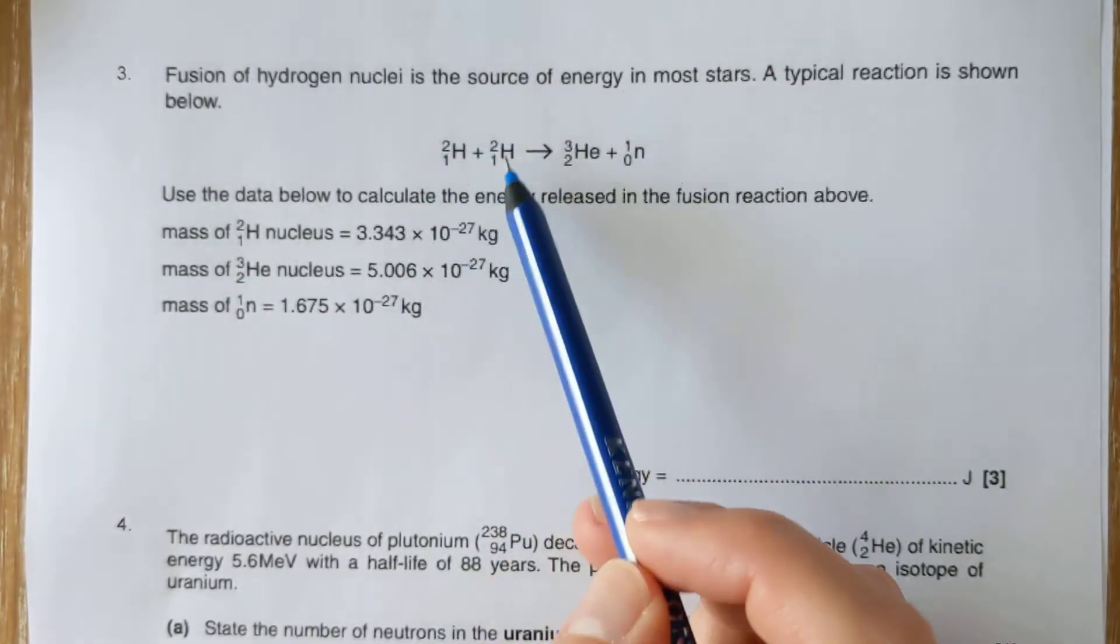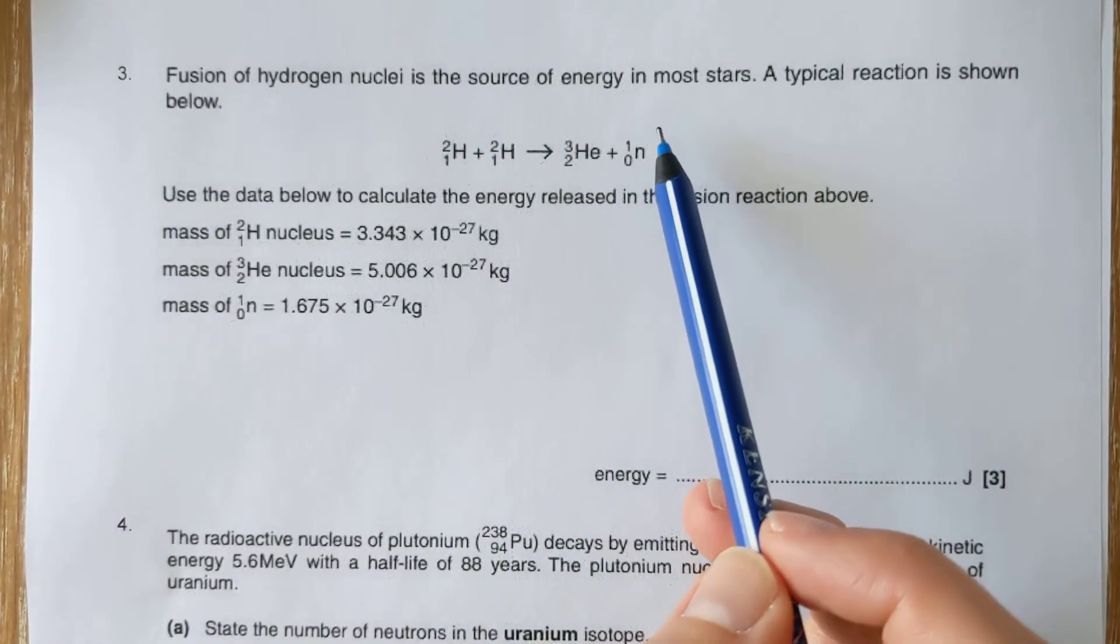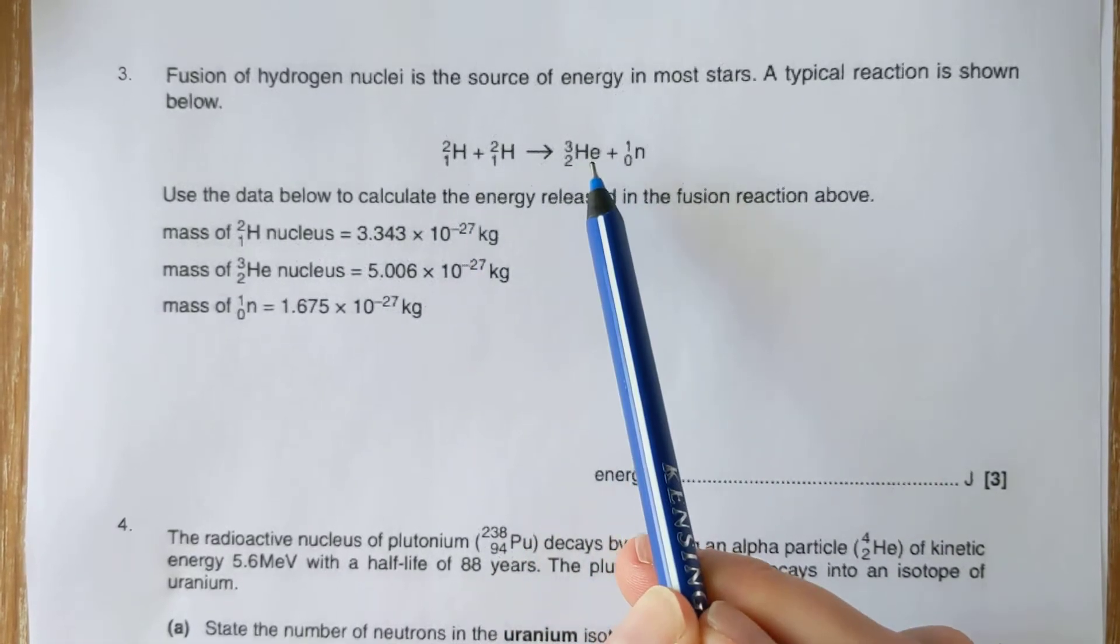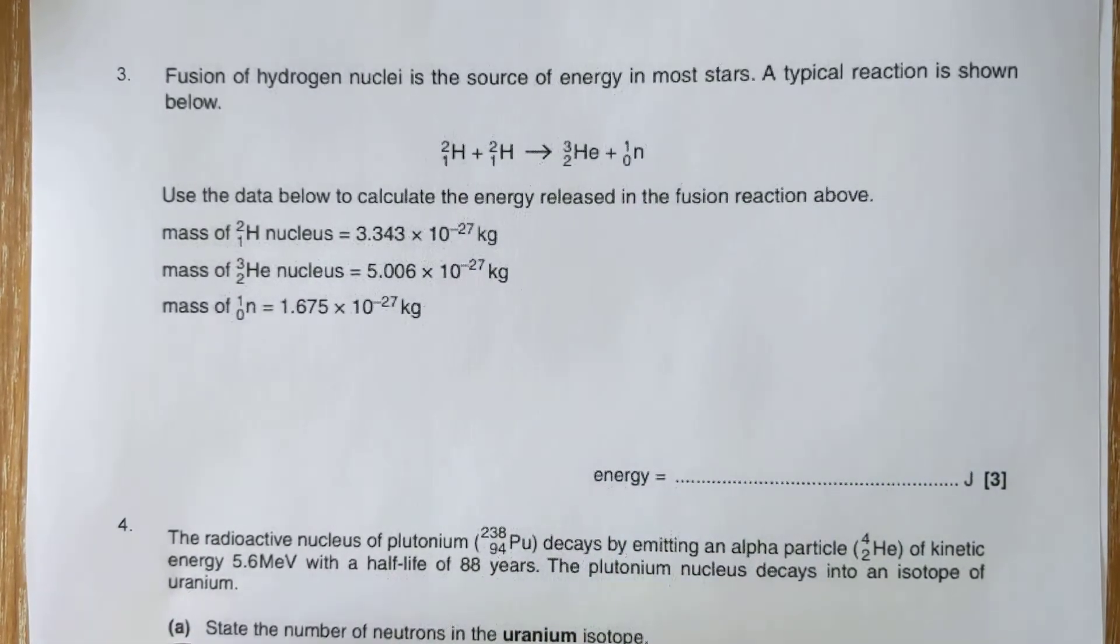So we're going to work out the total mass before, the total mass after. That will let us work out how much mass has gone missing, and then we use Einstein's formula to convert mass to energy. So here we go.